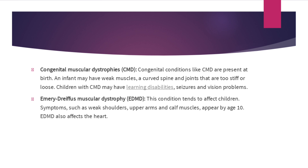Congenital muscular dystrophies, or CMD, are present at birth. An infant may have weak muscles, a curved spine, and joints that are too stiff or loose. Children with CMD may also have learning disabilities, seizures, and vision problems. Another type is Emery-Dreifuss muscular dystrophy, which tends to affect children. Symptoms such as weak shoulders, upper arms, and calf muscles appear by age 10, and it can also affect the heart.